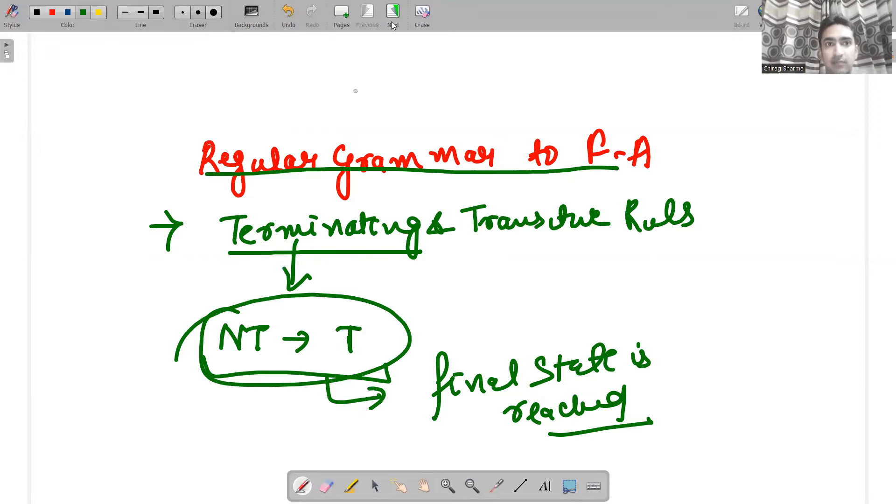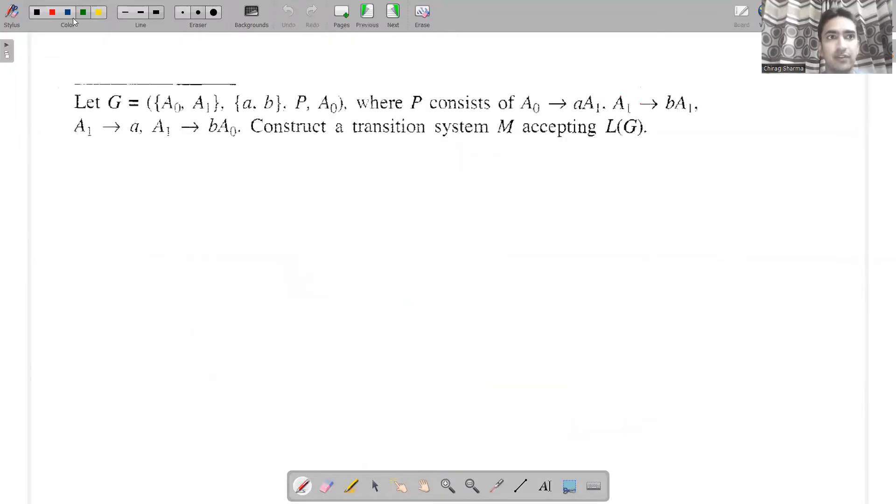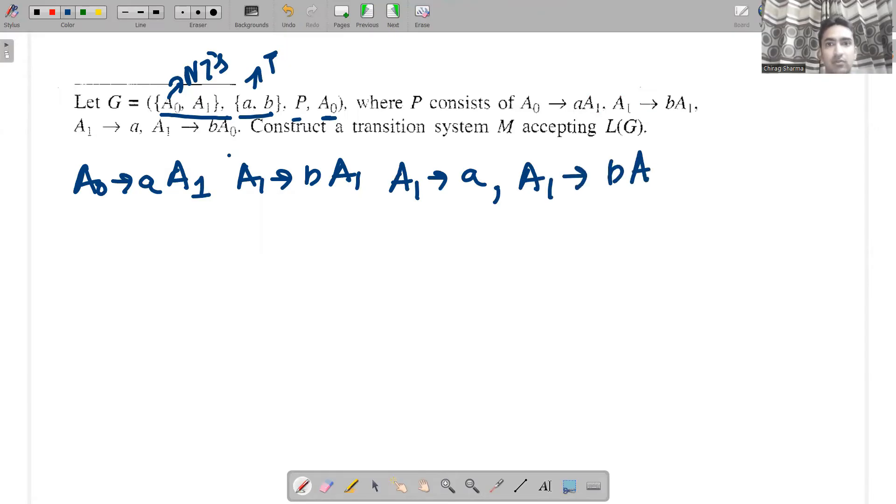I'll take a particular example. In this example, we have been given non-terminals, terminals, production rules, and a starting symbol. Where P contains the transitive rules: A0 given A goes to A1, A1 given B goes to A1, A1 given A is a terminating rule (so it will be accepted), and A1 given B goes to A0.